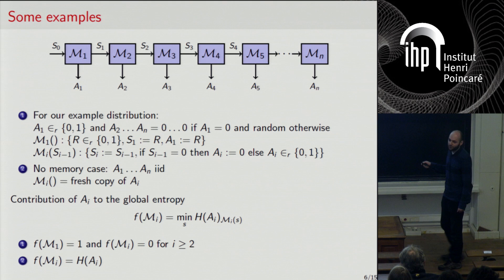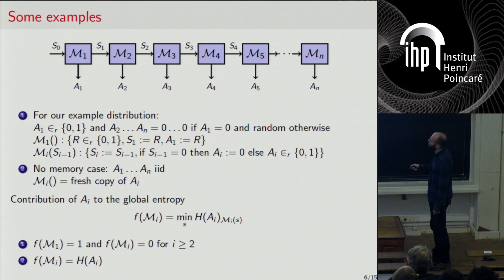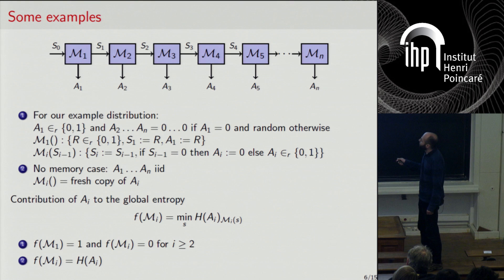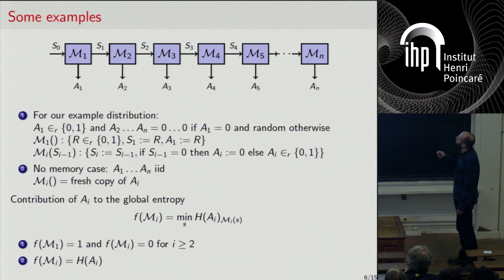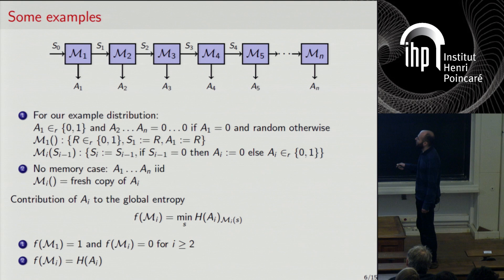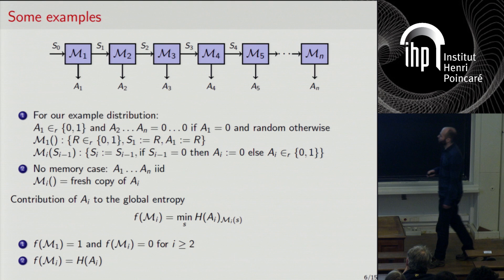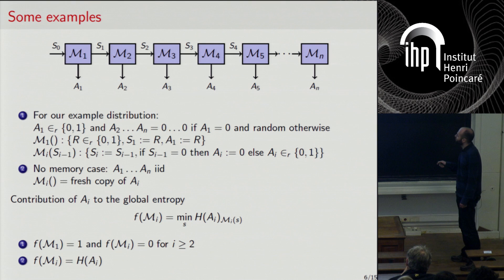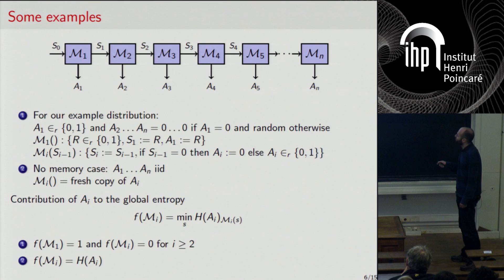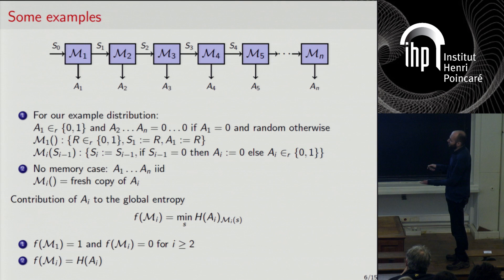In our two examples: for map M_1, it always outputs a random bit, so F(M_1) = 1. For the other maps, if I pick internal state equal to zero, the output is deterministic — A_i equals zero — so the entropy is zero. Thus F(M_i) = 0 for all i greater than 2. Whereas in the IID case, there is no internal state, so the minimization is trivial and I only have to compute the entropy of A_i, which is just the entropy of the marginal on the i-th system.